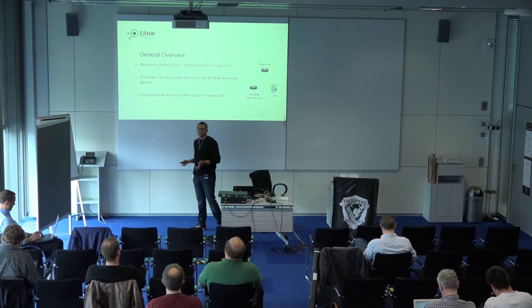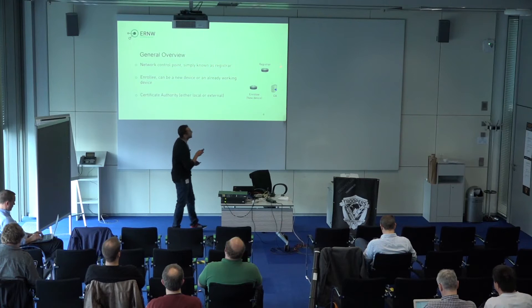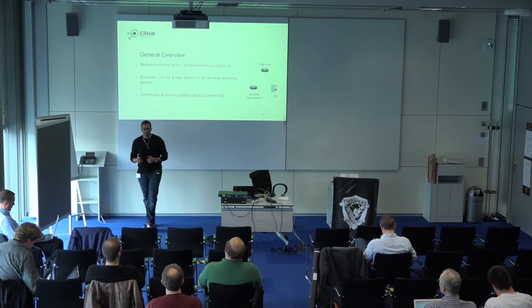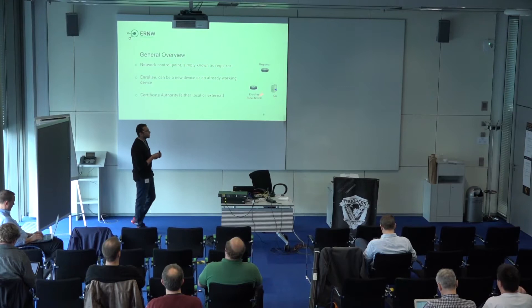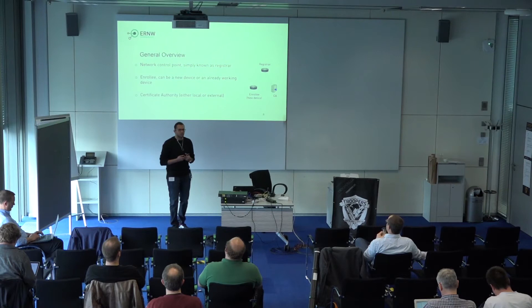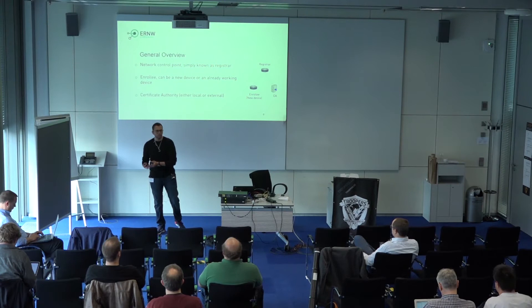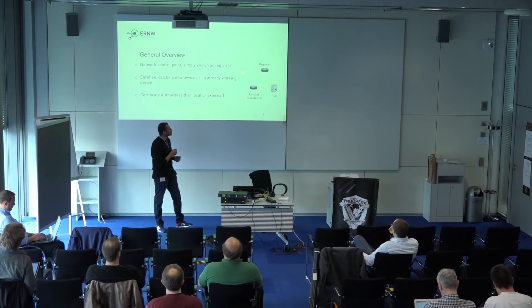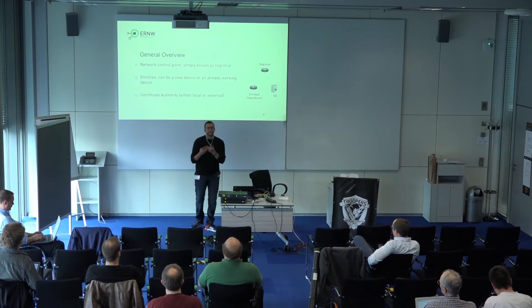What are the main components needed for an Autonomic Network? It's just one device — the registrar. This registrar acts as the controlling point of the network and is responsible for deciding whether new nodes can join the domain. This is based on a whitelist configured on it. Second, a certificate authority, which issues certificates for new enrollees — proof that you are inside the domain. With Cisco, one device can act as both CA and registrar, so literally all you need is one device for a small network.